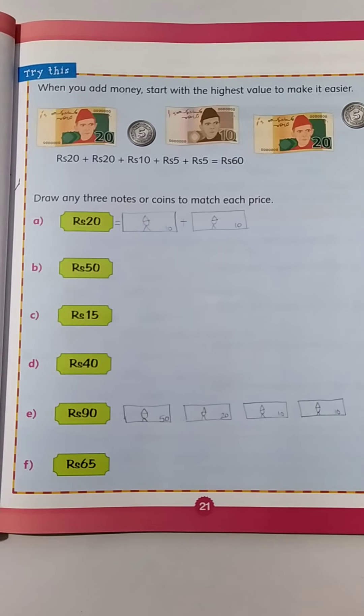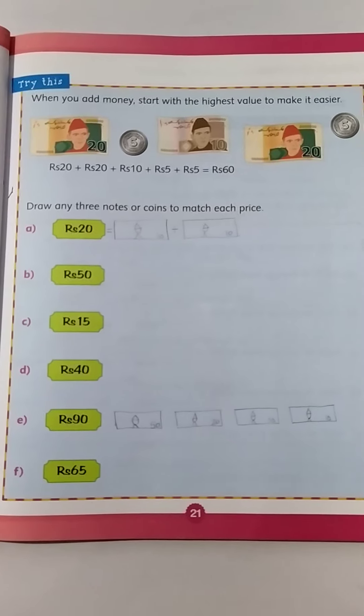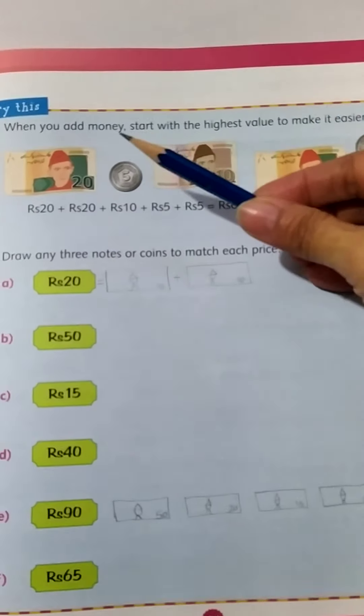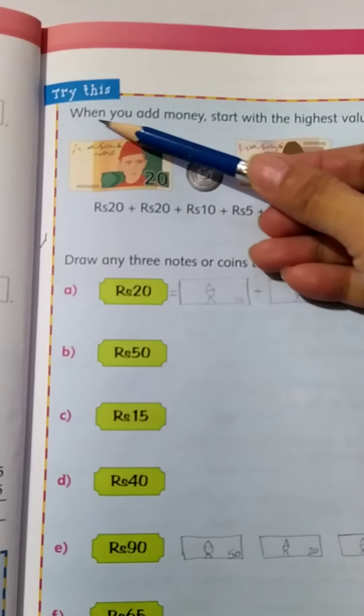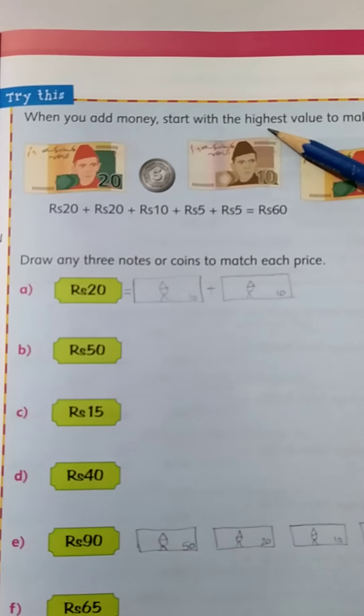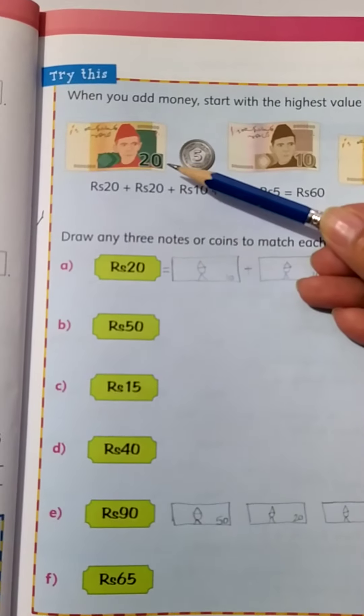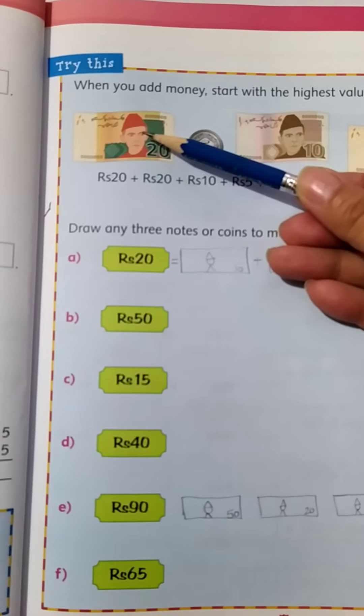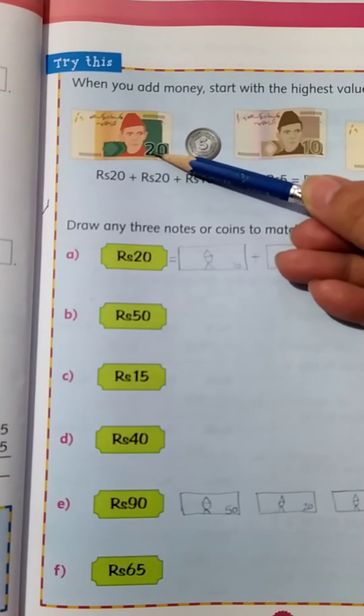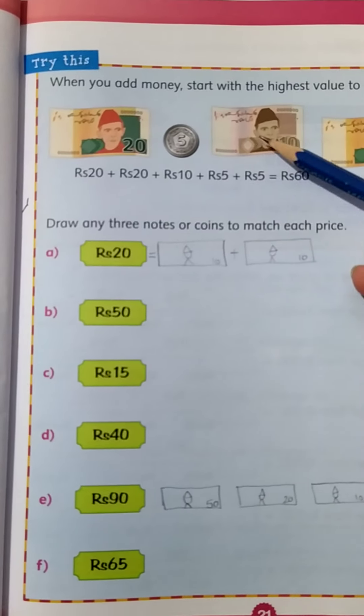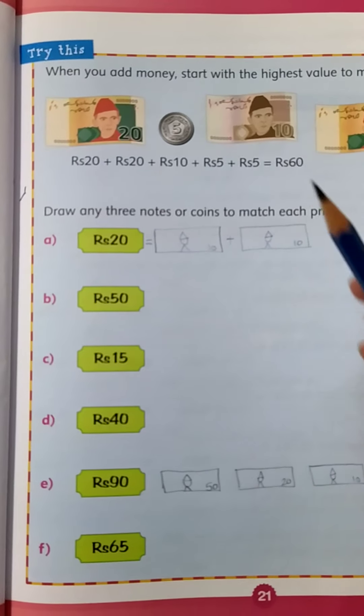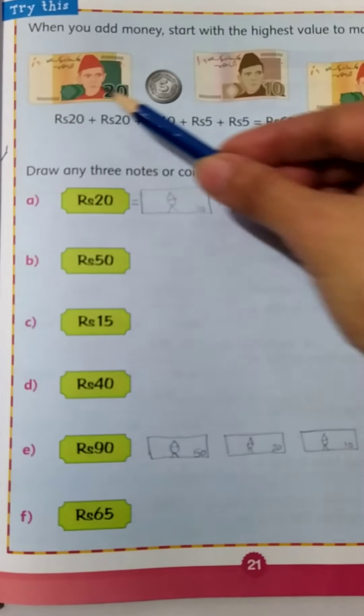Let's move to our page number 21. So what are they asking us? When you add money, start with the highest value to make it easier. So we are again adding money. What we have to do is add the big notes before the smaller ones. We have random money and we have to add them.